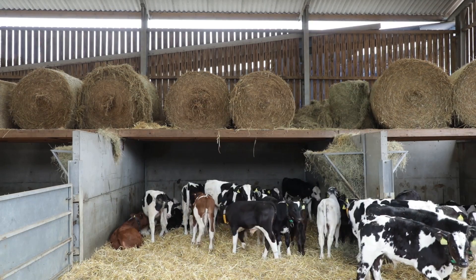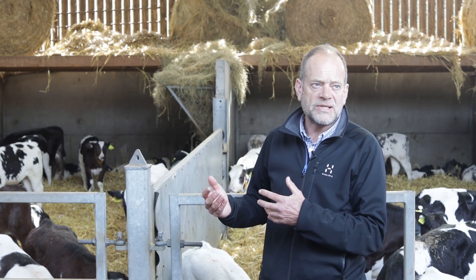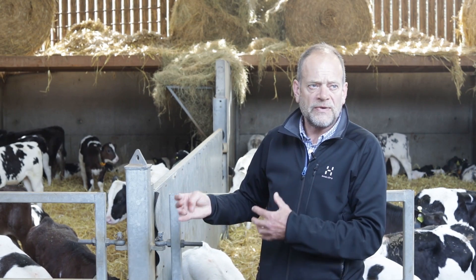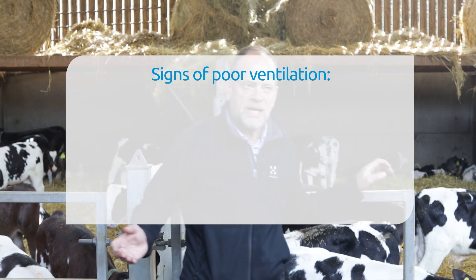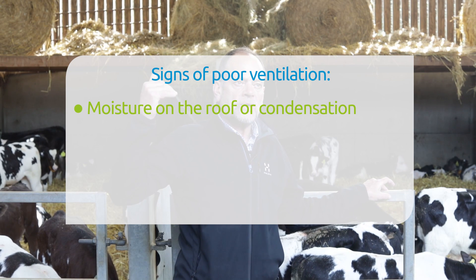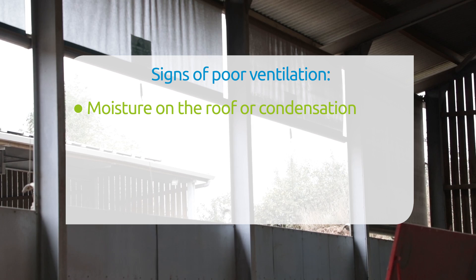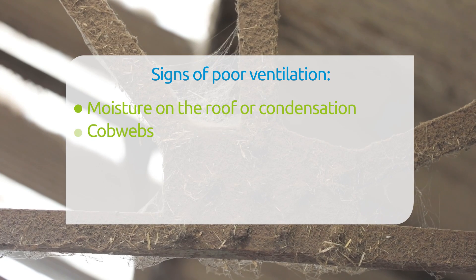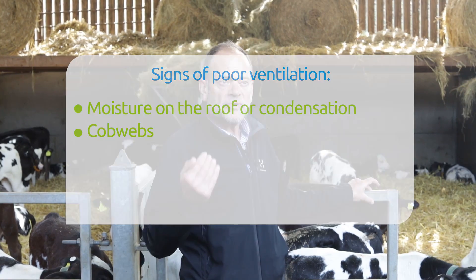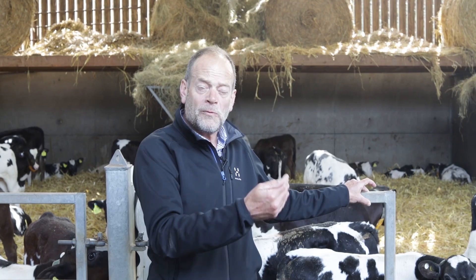We need the ventilation but we don't want the air speed. The kinds of things to look out for in a building are signs of inadequate ventilation — typically moisture or signs of moisture in the roof and on the woodwork, and also cobwebs. Cobwebs are a good way of determining whether some parts of the building are well ventilated and others are not.